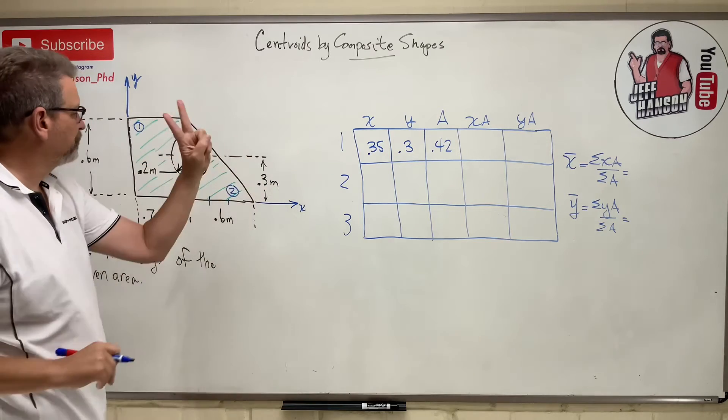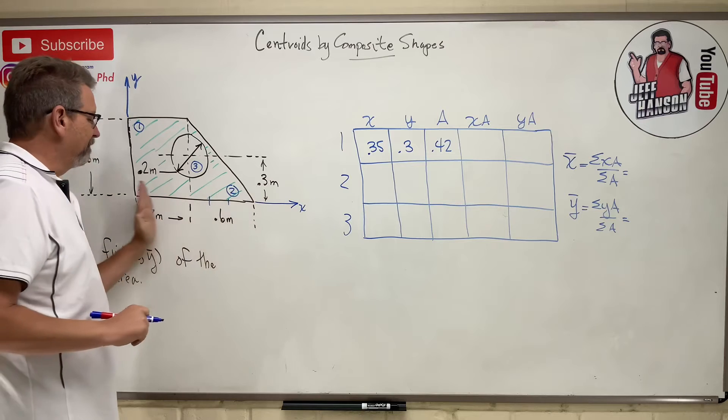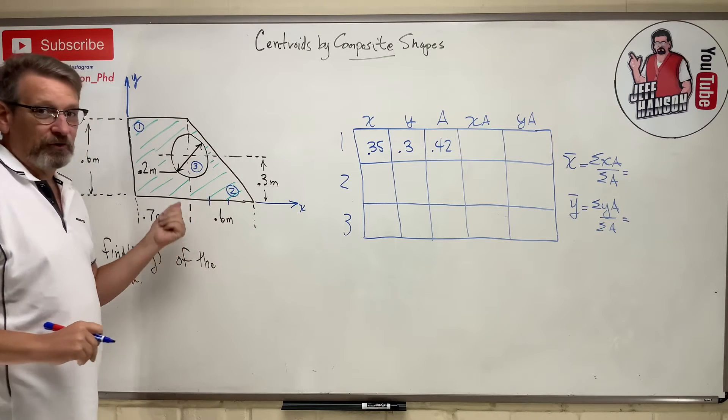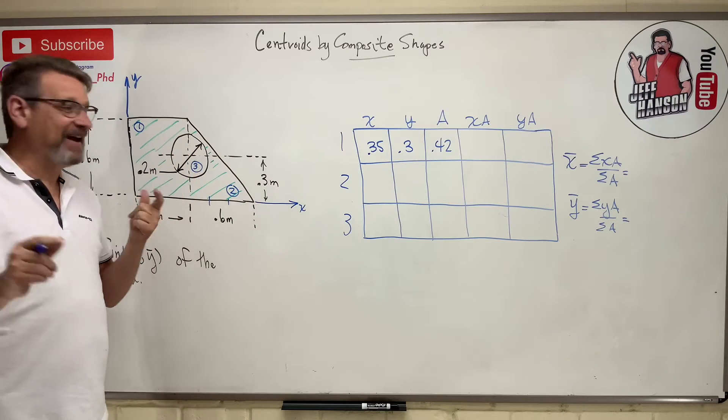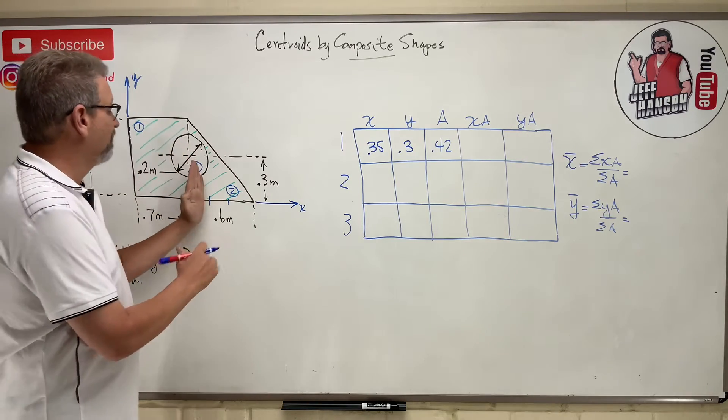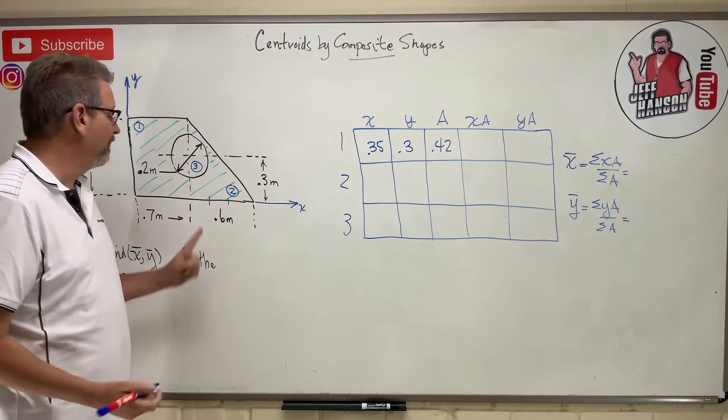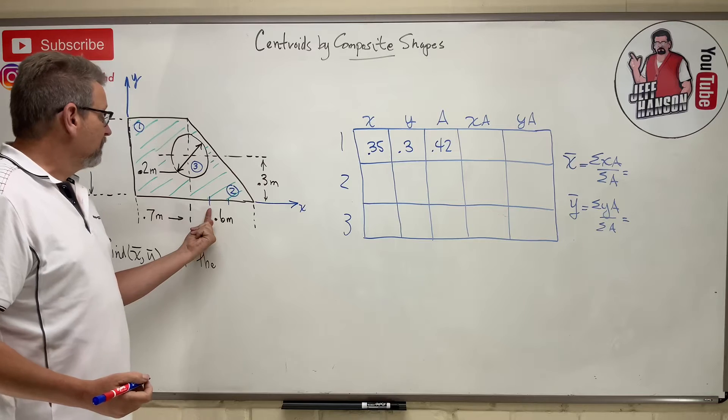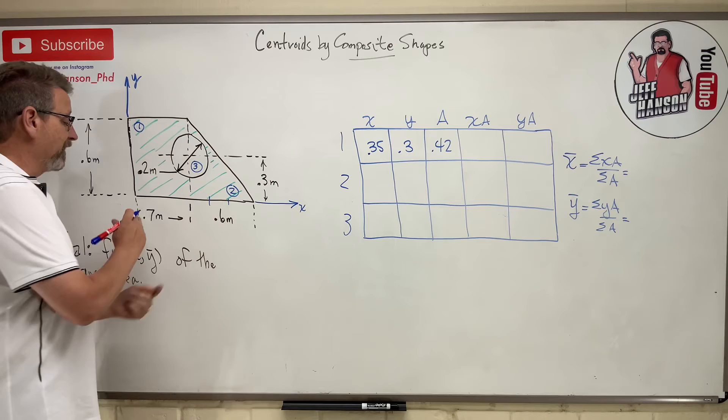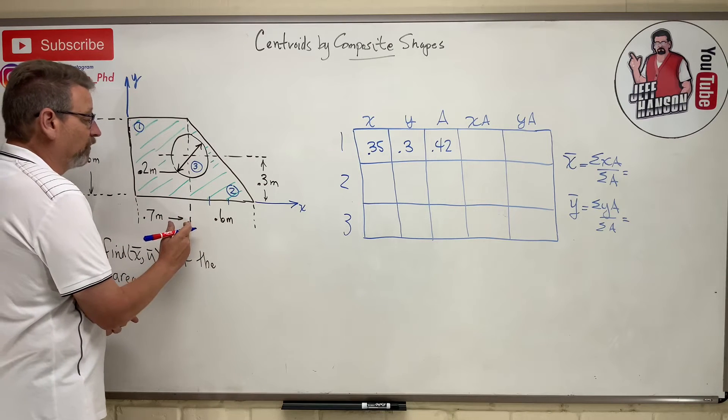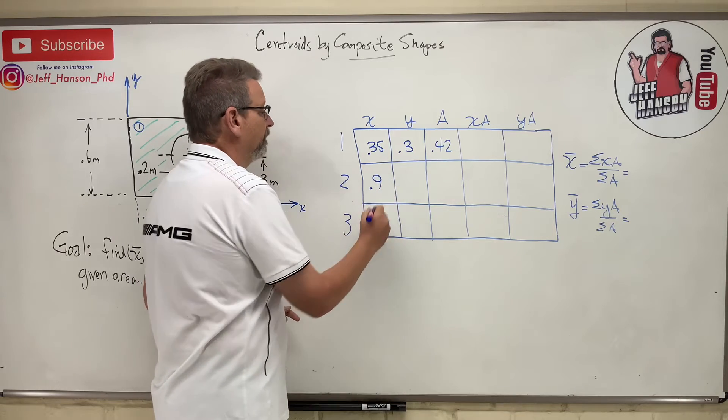Let's go to shape number two, the triangle. Where in the X direction is the bottom of shape number two? Well, remember for triangles, X bar for a right triangle is one-third the base from the fat end of the triangle, so it would be over here, not a third from the skinny end - it doesn't make any sense that you would balance it over there. But all dimensions are always referenced from the origin, so I got to go 0.7 to get to the triangle, then plus 0.2, which is 0.9.